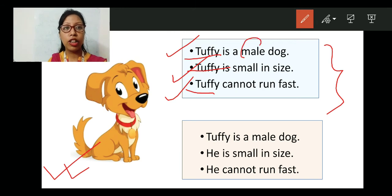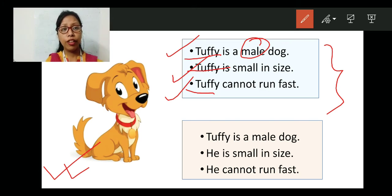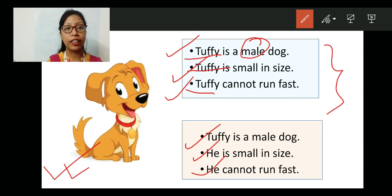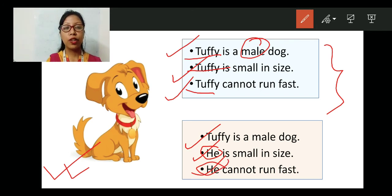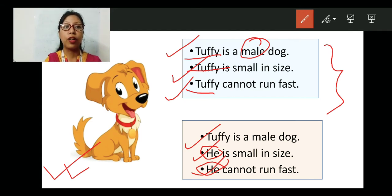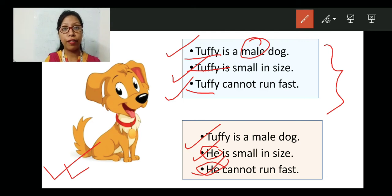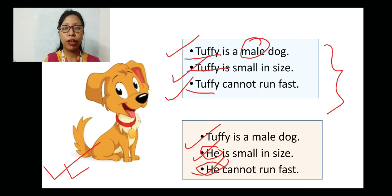But instead of using Tuffy three times, we can also use 'he'. Why? Because we know the dog is a male dog. So I have written: Tuffy is a male dog. He is small in size. He cannot run fast. Instead of Tuffy, I have used 'he'. We use pronouns to avoid repeating the same word because it becomes irritating. We check whether the person or animal is male or female — if male, we use he; if female, we use she; and if we don't know the gender, we use it.